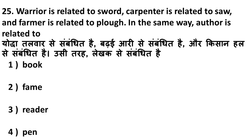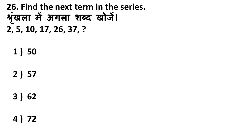Next question: warrior is related to sword, carpenter is related to saw, farmer is related to plow — in the same way, author is related to what? This is comparatively simple. An author is related to pen. So the correct answer is pen.